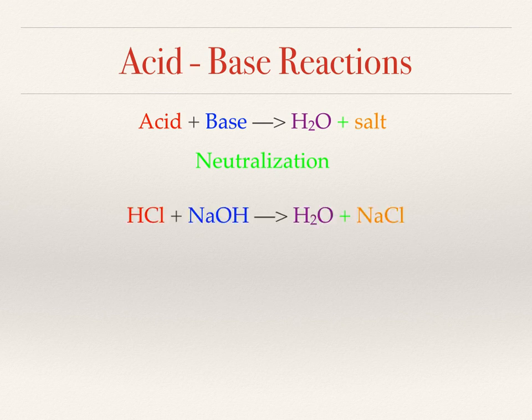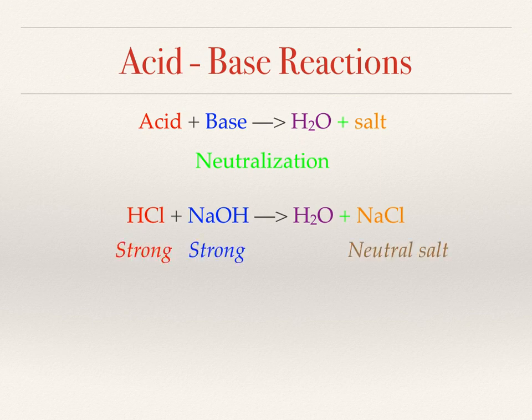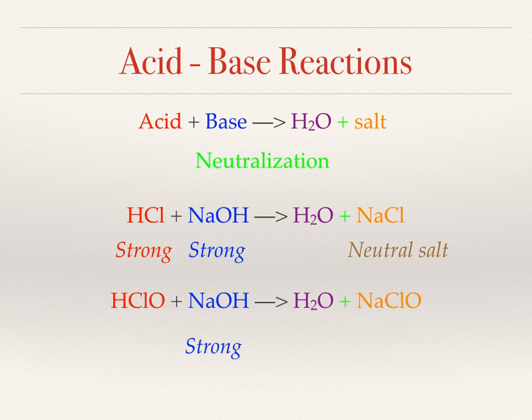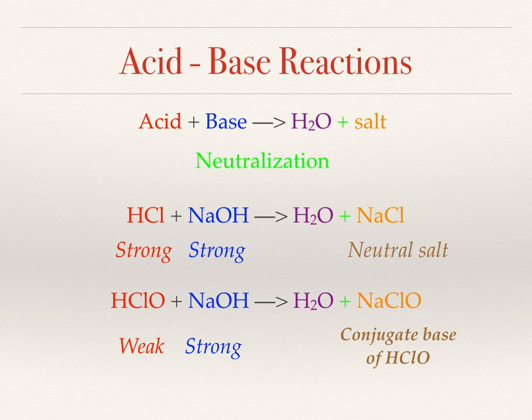The first example we'll look at is HCl and NaOH — both of those are strong. HCl, hydrochloric acid, is your strong acid, and NaOH, sodium hydroxide, is your strong base. Mix those together and you make water and a neutral salt, NaCl. A different example would be if we switch up the acid: hypochlorous acid is a weak acid, so when you mix them together you still make water, but you also make NaClO, which is the conjugate base of your weak acid. That's an important thing we'll come back to.